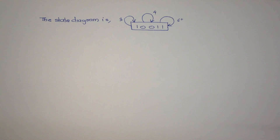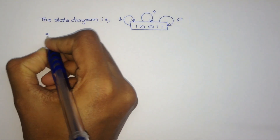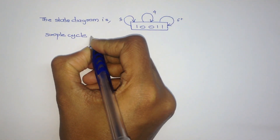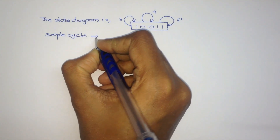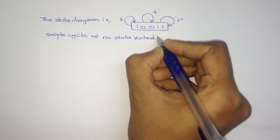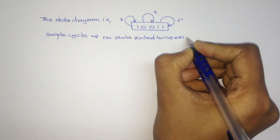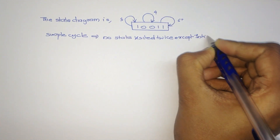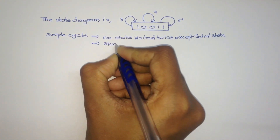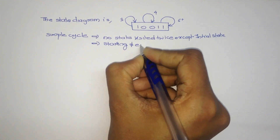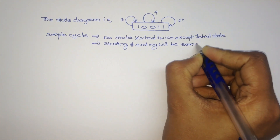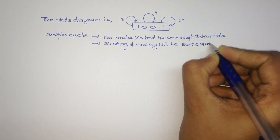First of all, we have to find the symbol cycle. Symbol cycle means no state is visited twice except the initial state. Also, the starting and ending will be the same state. That is the symbol cycle.